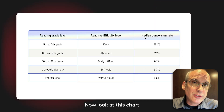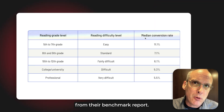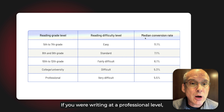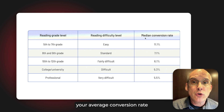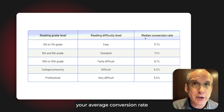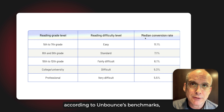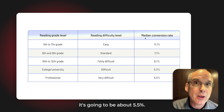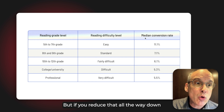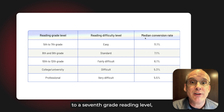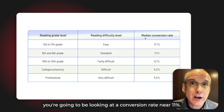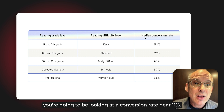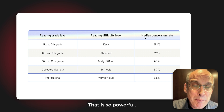Look at this chart from their benchmark report, as it perfectly demonstrates the point. If you're writing at a professional level, your average conversion rate according to Unbounce's benchmarks is going to be about 5.5%. But if you reduce that all the way down to a 7th grade reading level, you're going to be looking at a conversion rate nearer 11%. That is so powerful.